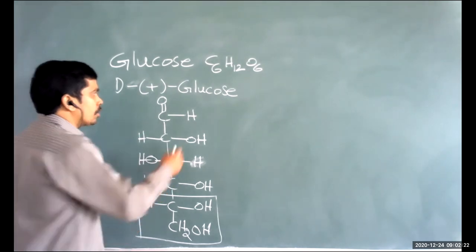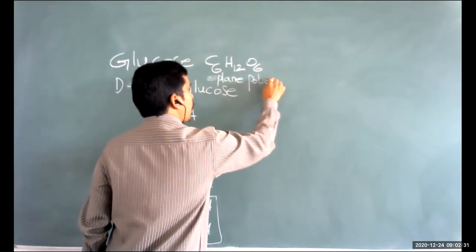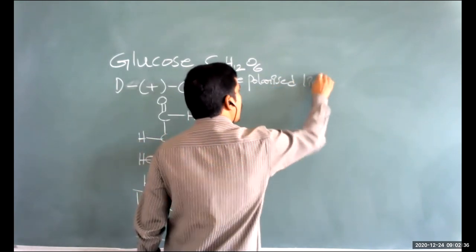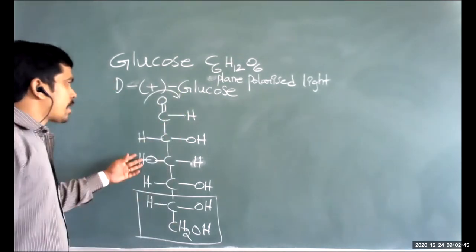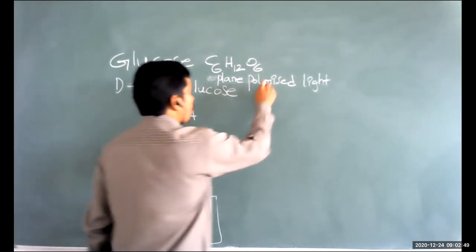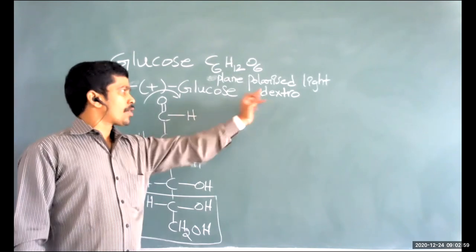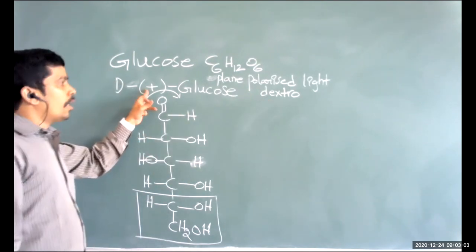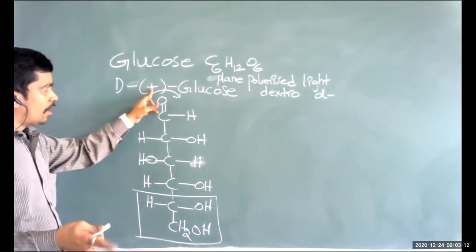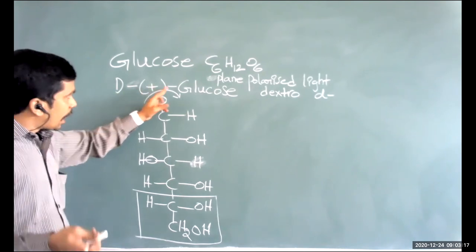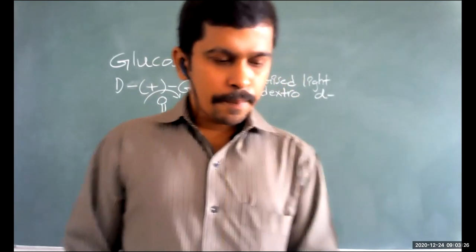The '+' sign in D+ glucose means that when plane polarized light is passed through it, the light is rotated in the clockwise direction — making it a dextro compound. Dextro compounds are represented with a '+' symbol or small 'd' hyphen. So D+ glucose can also be written as d-glucose.